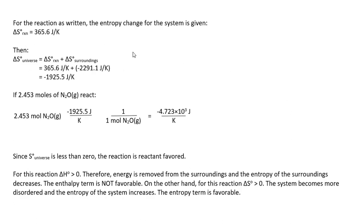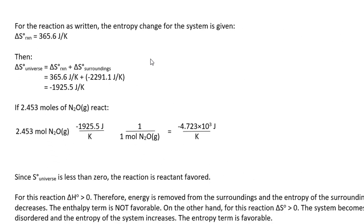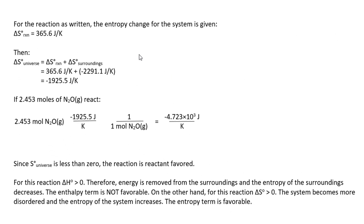The next step is to calculate the ΔS_universe. So we substitute these values into the equation ΔS_universe equals ΔS_reaction plus ΔS_surroundings. And we find that the ΔS_universe is a negative 1,925.5 joules per kelvin. So this is a reactant favored or non-spontaneous reaction.